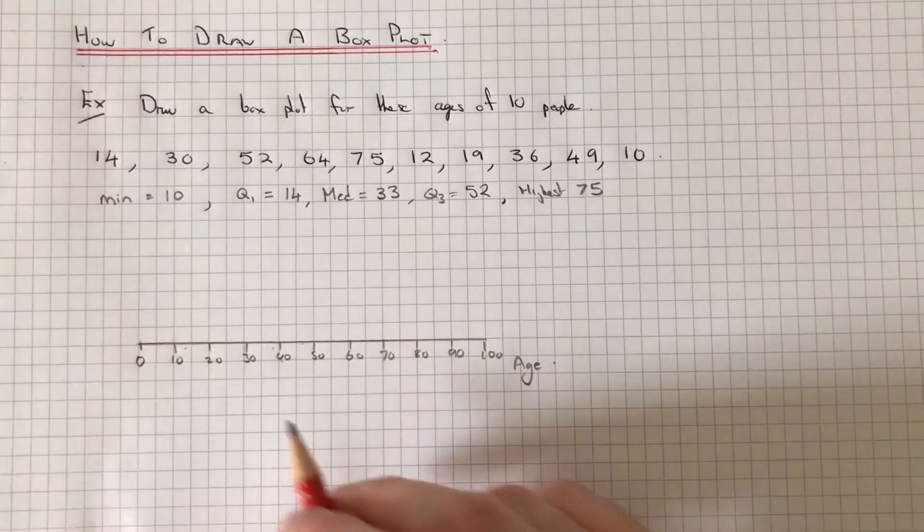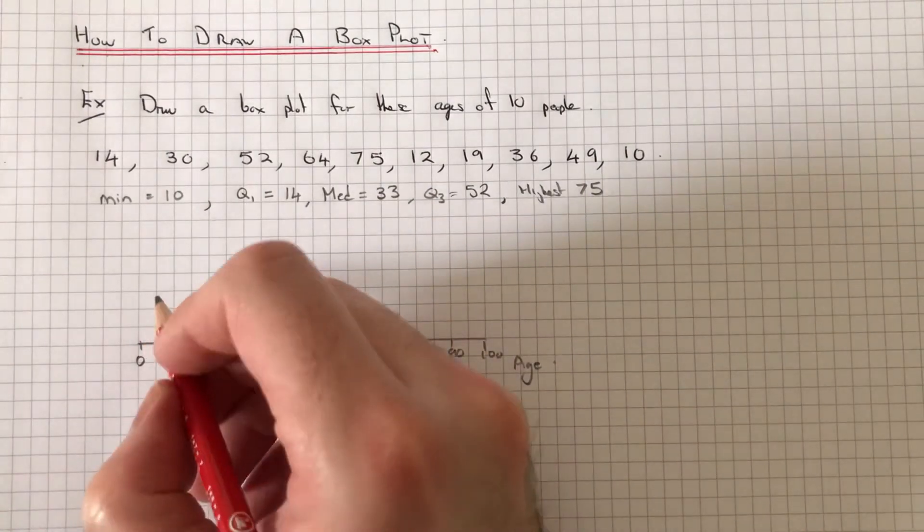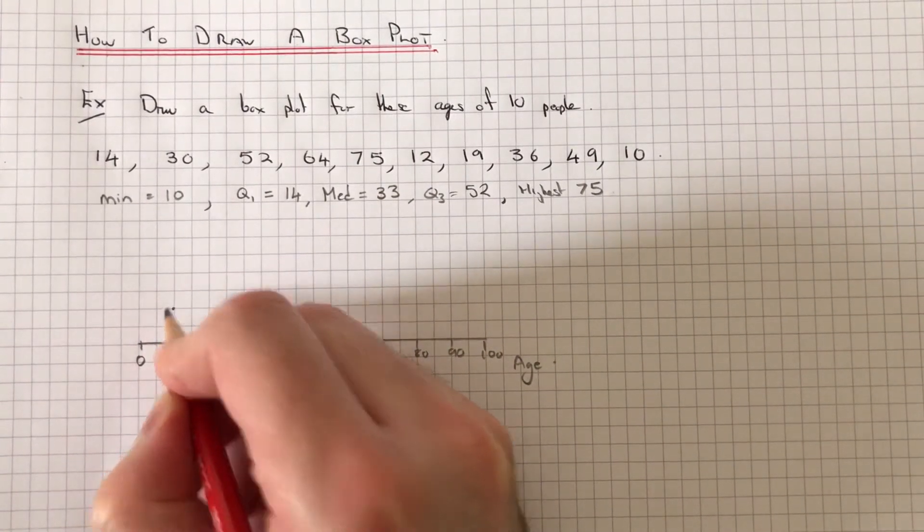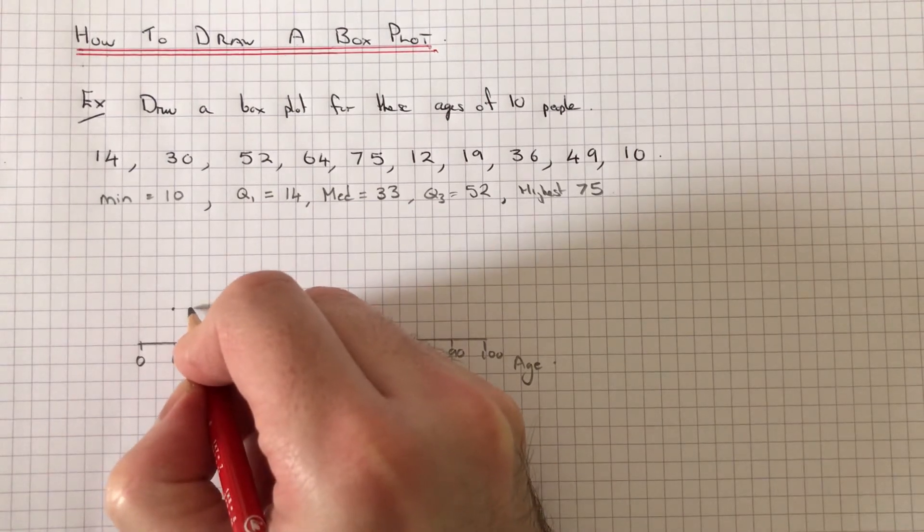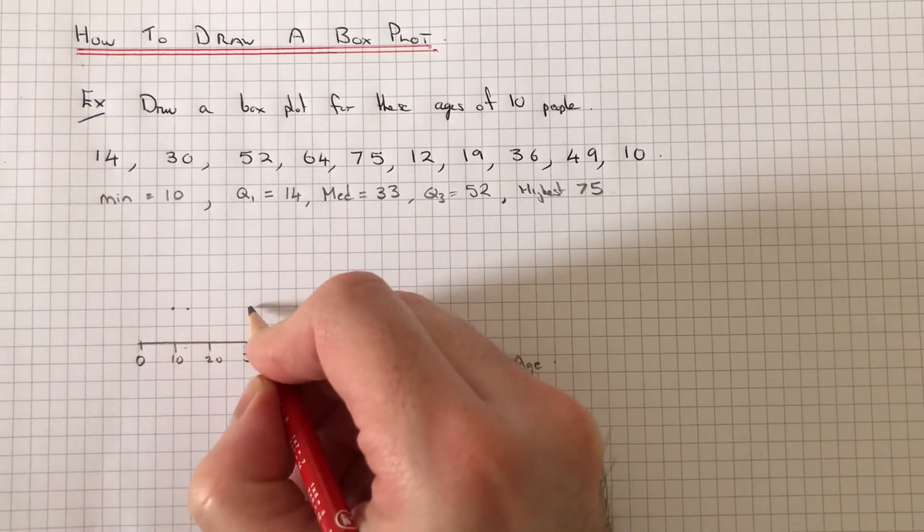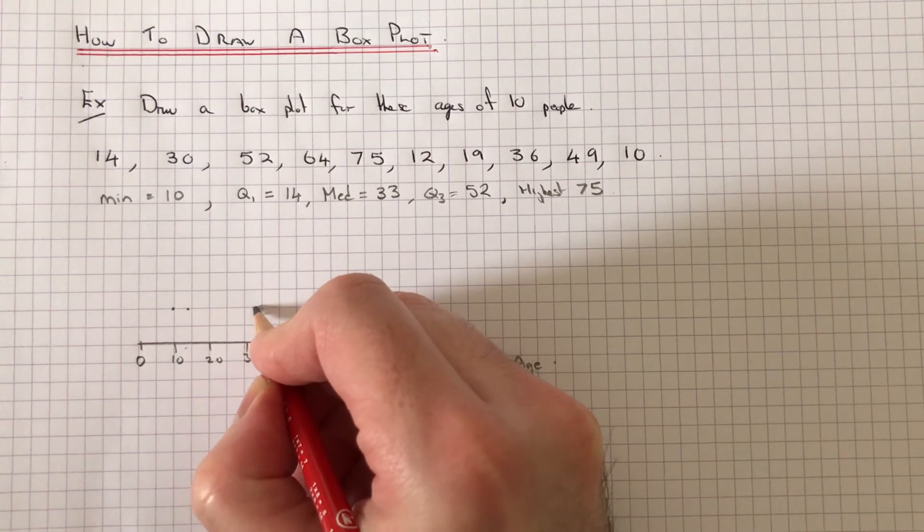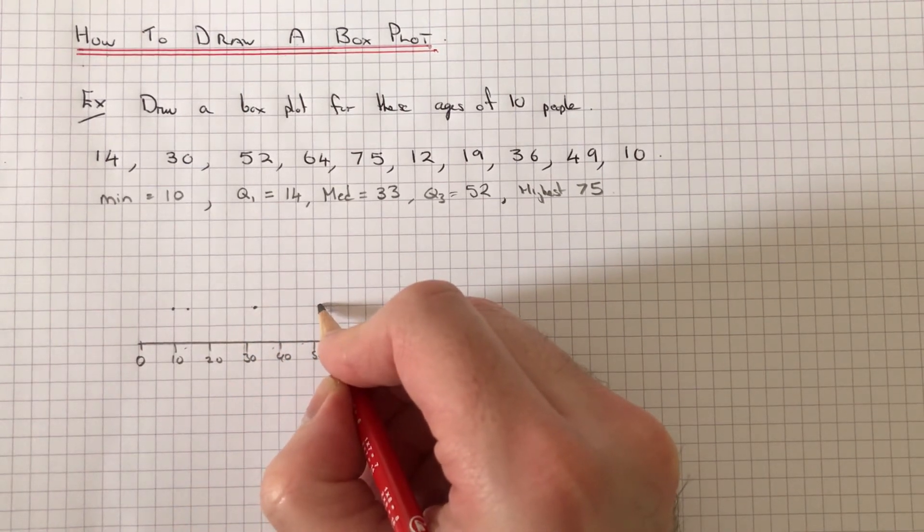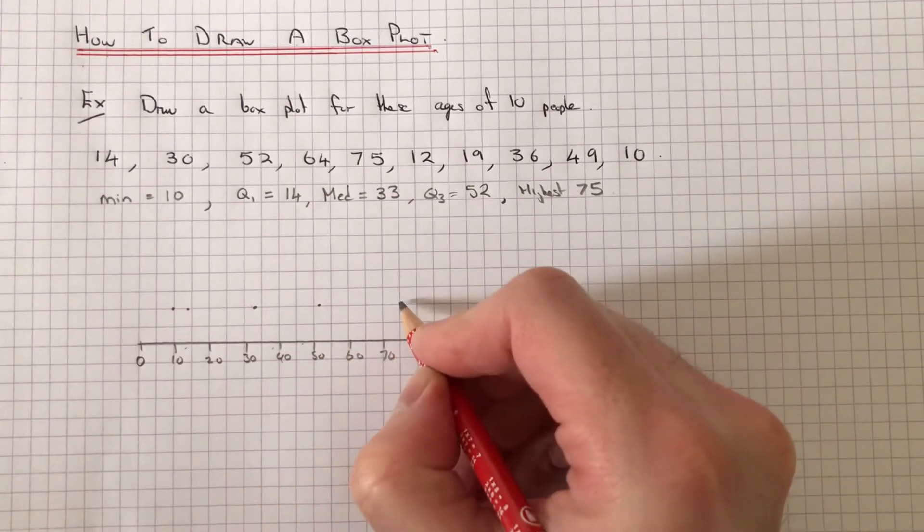So if we just put a dot for these five points above the x-axis, so the minimum value is 10. Q1 was 14, the median was 33, Q3 was 52 and our highest number was 75.